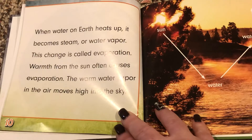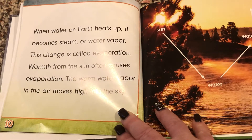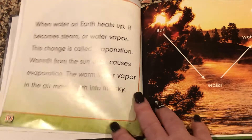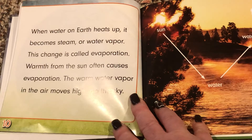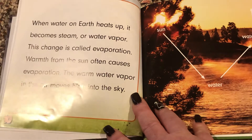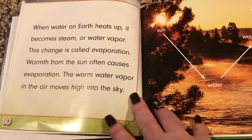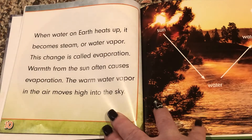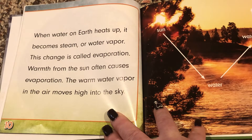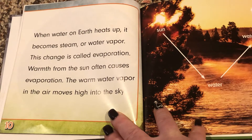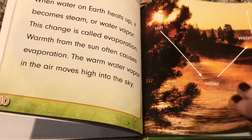When water on Earth heats up, it becomes steam or water vapor. This change is called evaporation. Warmth from the sun often causes evaporation, and the warm water vapor in the air moves high into the sky.